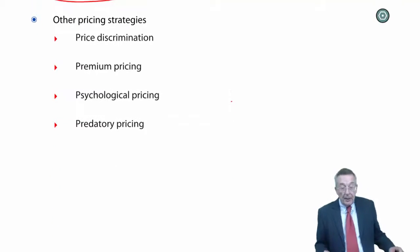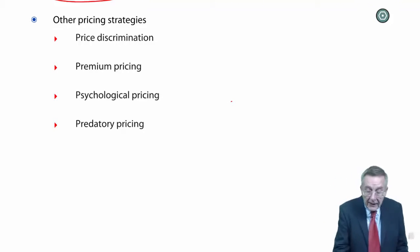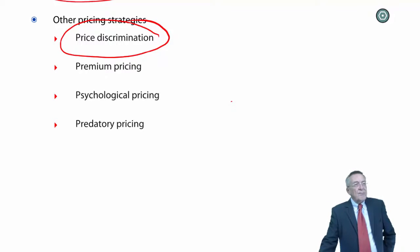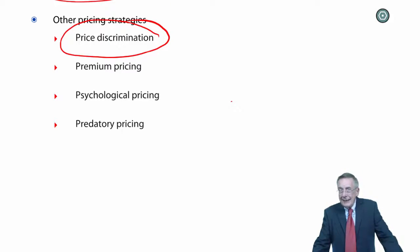Finally, other strategies, perhaps marginally less important, but even so, the first one, price discrimination. This is a nice one. It is a fact, I want to mention coffee again. It is a fact that a jar of coffee in India is cheaper than the same jar in Europe. Same manufacturer. Nescafe or whatever, you can buy the same coffee a lot cheaper in India than you can in Europe.